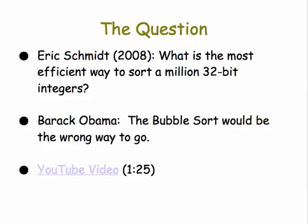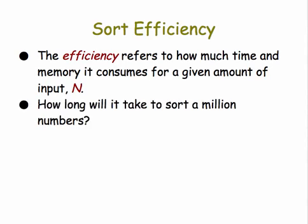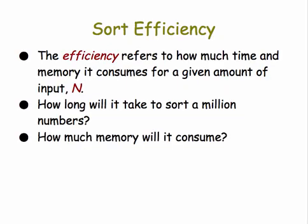Well, he was right. In this presentation, we want to see why he was right. Efficiency, as we know, refers to how much time and memory an algorithm consumes for a given amount of input. In the case of sorting, it would be a question like: how long will it take to sort a million numbers? And how much memory will it consume?